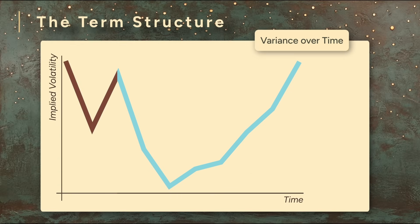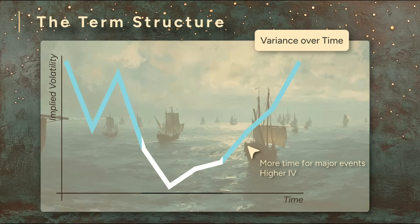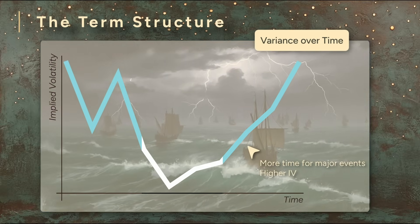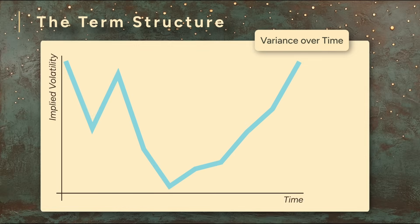Near-term options, those expiring soon, often show different implied volatilities than options that expire further out. Longer-dated options often have higher implied volatility because there's more time for big events like earnings announcements or economic changes to unfold. But not always, as we see here.